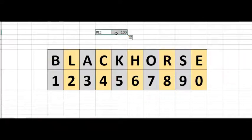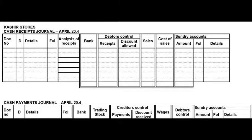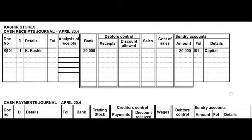The first transaction on the 1st says that K Cashier, who is our owner, increased his capital contribution by 20,000 rand and receipt K101 was issued. If we record this in the CRJ it will be a simple capital transaction. Remember, if the document says K101 then you use that K, and capital never goes to analysis of receipts.